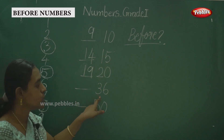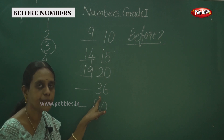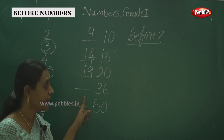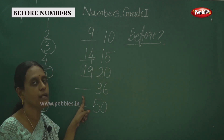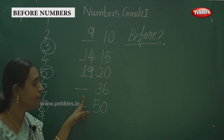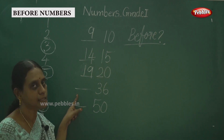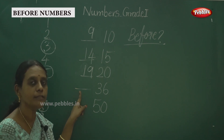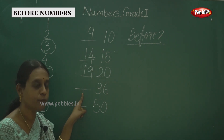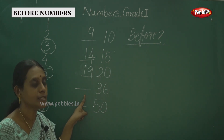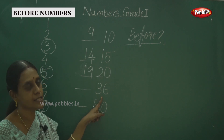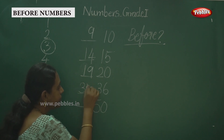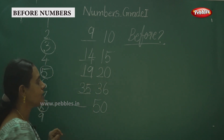Okay, this number is 36. Now, what number comes before 36? We count from 30: 30, 31, 32, 33, 34, 35, 36. So here you have to write 35. Your answer is correct.